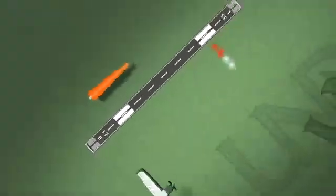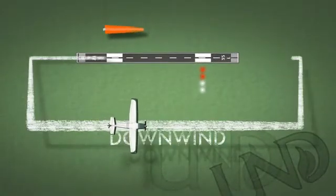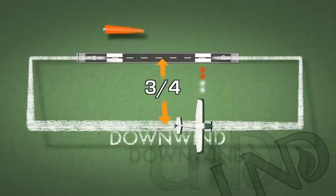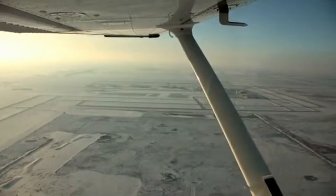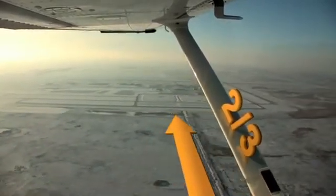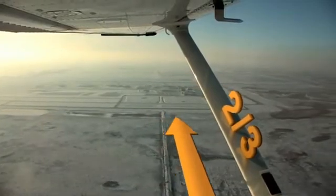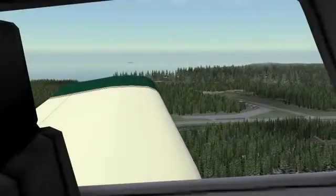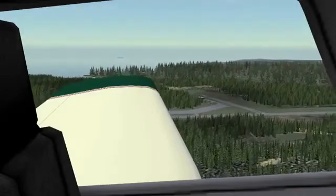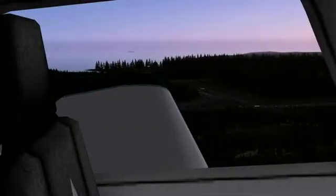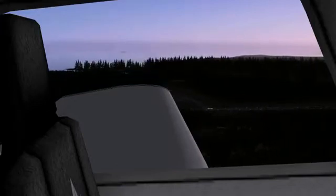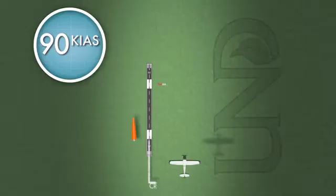The downwind leg should be positioned approximately three-quarters of a mile from the runway. Using references on the aircraft can assist in estimating this distance. Looking at the strut on the Cessna 172, the runway should intersect the strut at a point two-thirds from the fuselage towards the wing. For those flying light, low-wing GA aircraft, using two-thirds up the wing from the fuselage also works in most cases. This can be handy at night and at airports that have runways not aligned with other recognizable geographic references, such as roads and section lines.